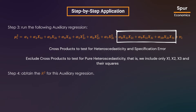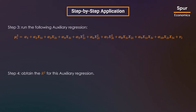If we also include the cross products of the independent variables, the White test equation will test for heteroscedasticity as well as specification error. If we want to test for pure heteroscedasticity, we can exclude the cross products and include only x1, x2, x3, and their squares. Therefore, we can adjust the test equation based on our objectives.